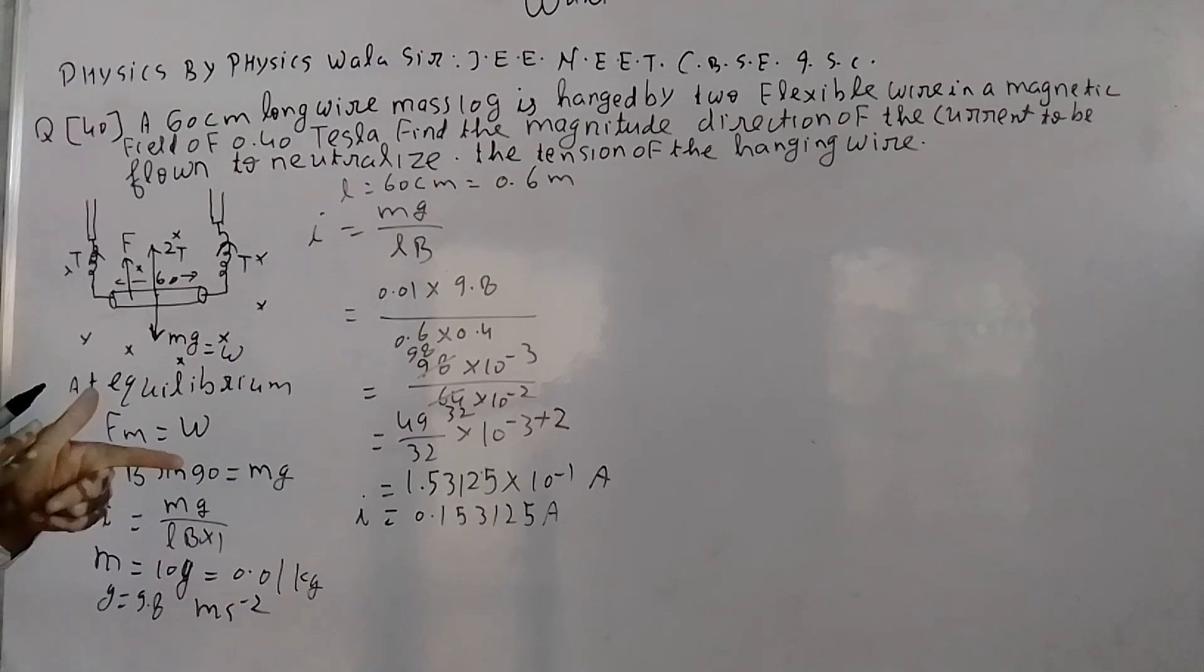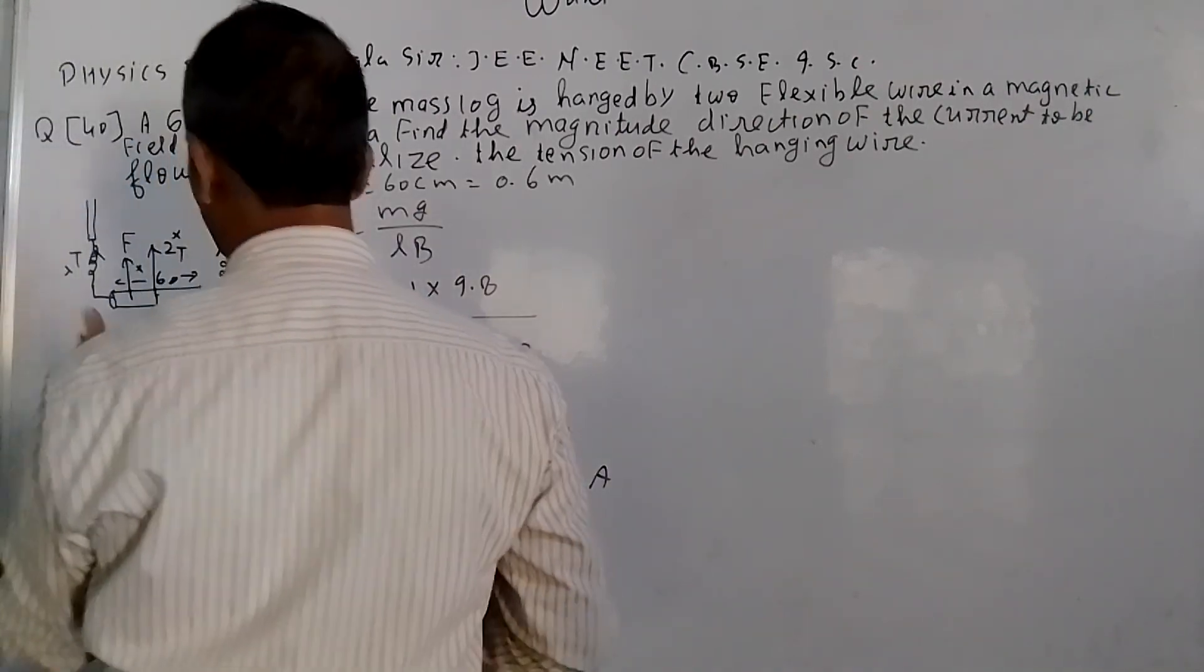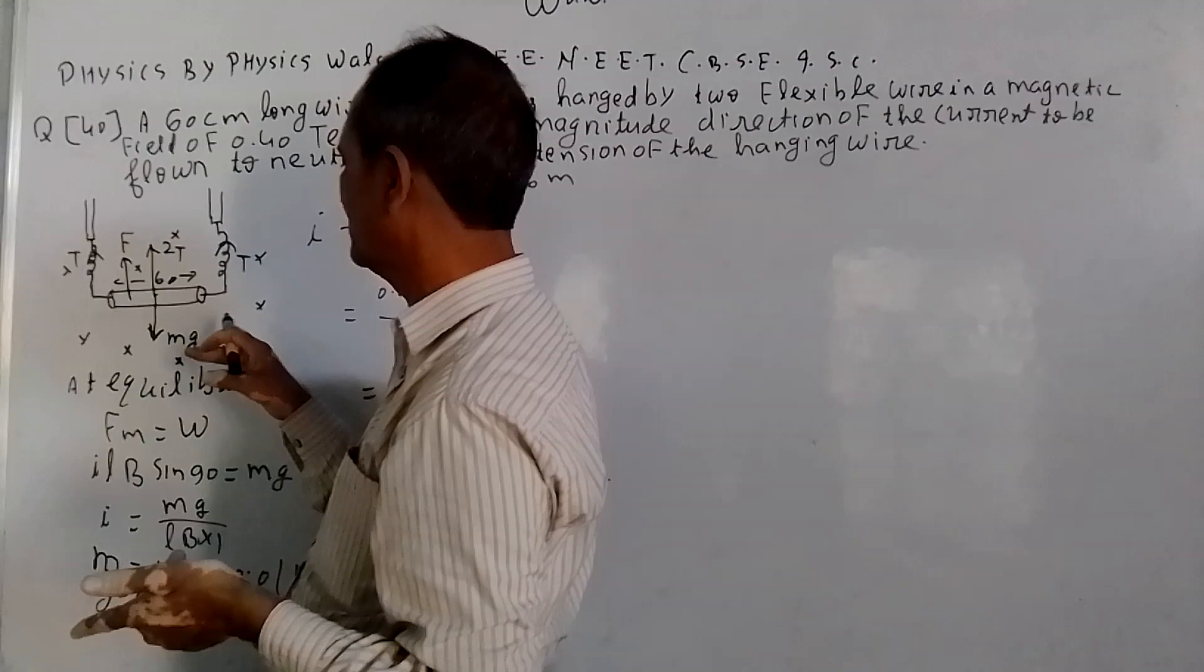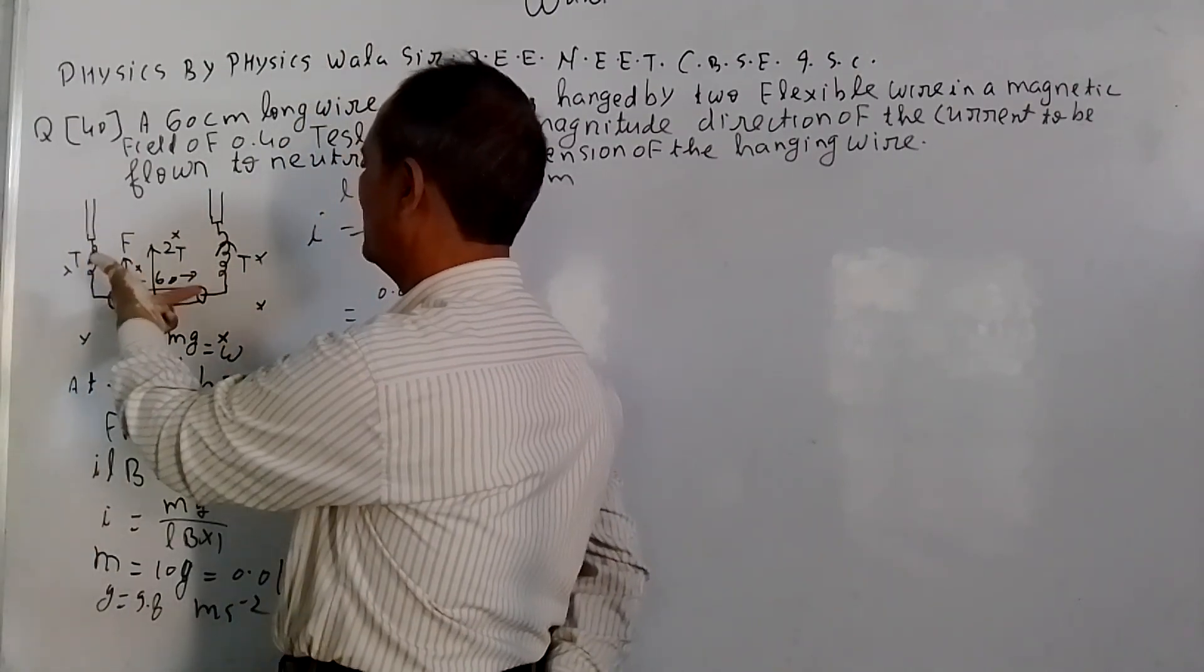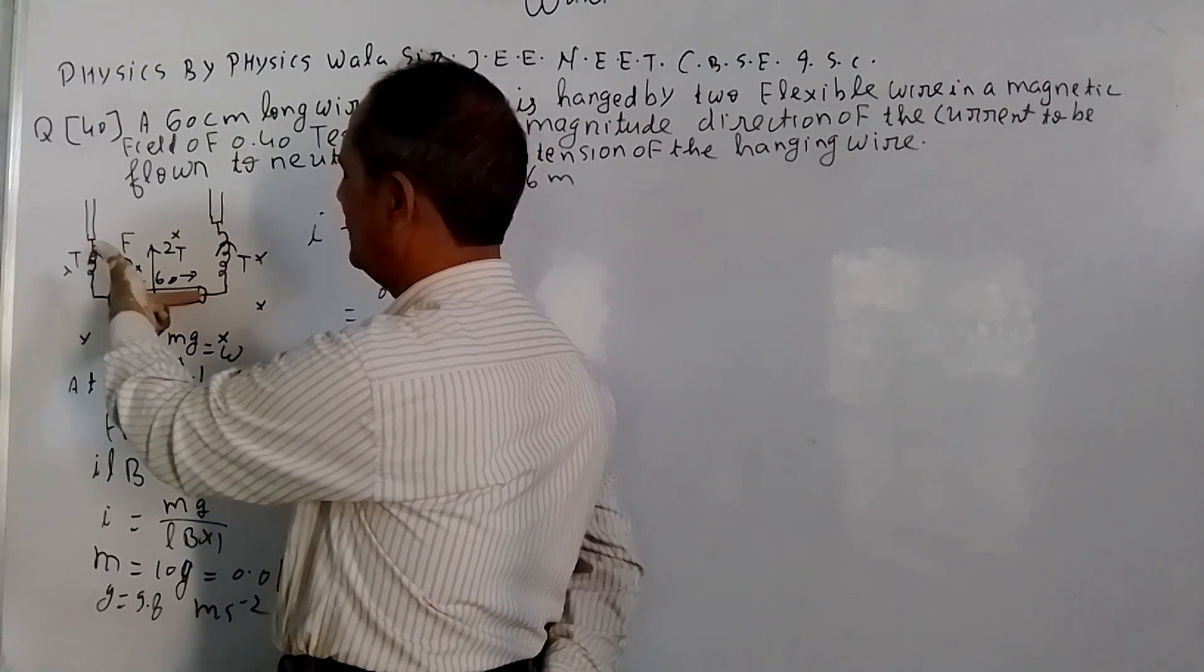I am going to use Fleming's left hand rule. Four fingers in the direction of the field, thumb in the direction of the force, then middle finger in the direction of current. So the field is in this direction, the force should be upward.